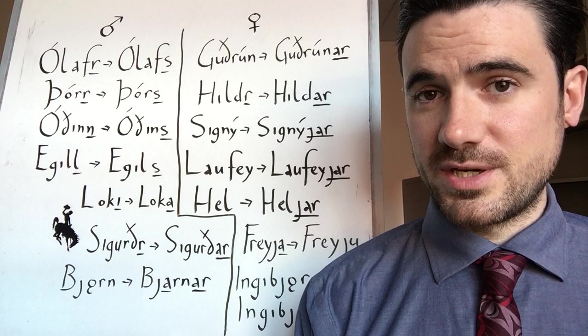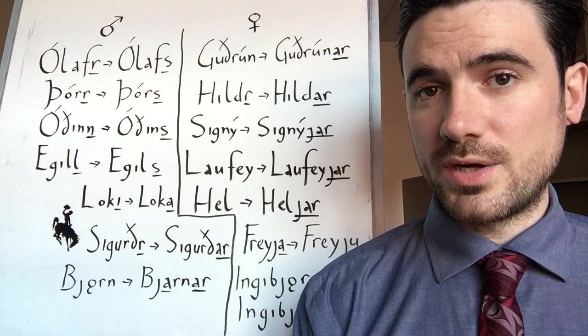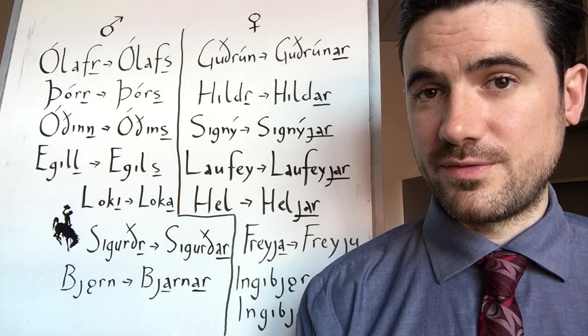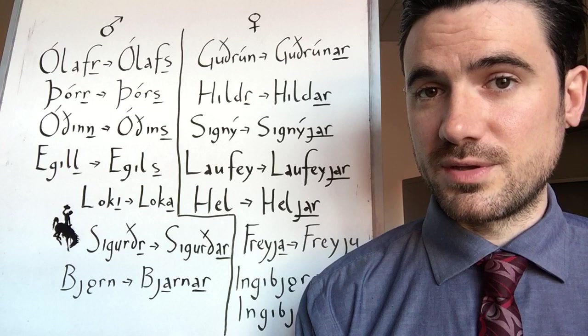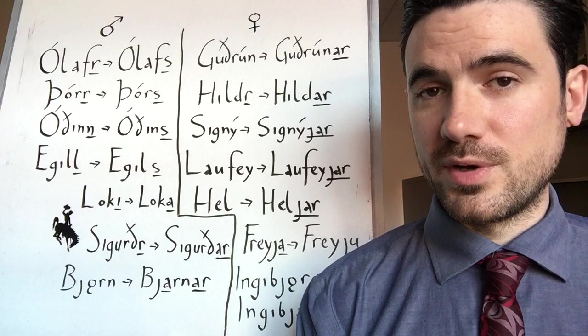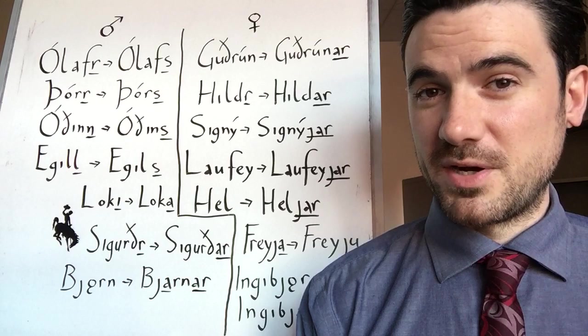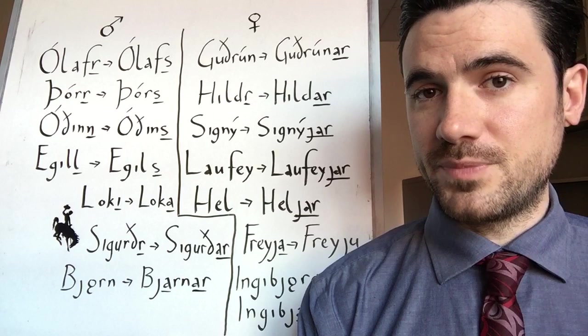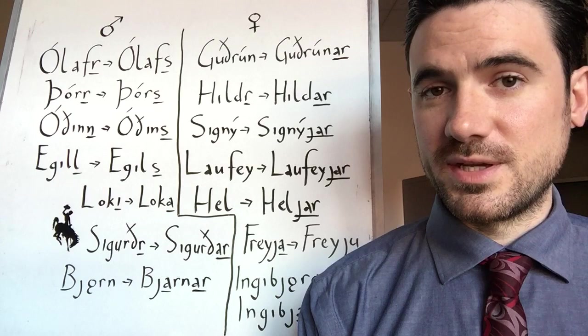But feminine names work a little bit differently. Under what circumstances would a person have the mother's name plus son or daughter rather than the father's name? Well, the mother might be higher ranking than the dad. This seems to be the case with Loki, who's known as Loki, Laufey's son, after his mother Laufey rather than Farbauti's son, after his father Farbauti. There may be something embarrassing in the association with the dad, or perhaps the mom is so famous that it conveys something more about the family connection to be named after the mom.